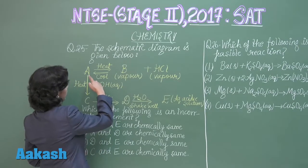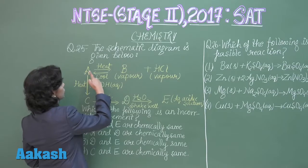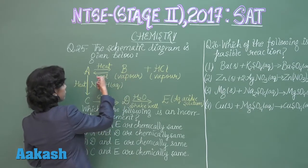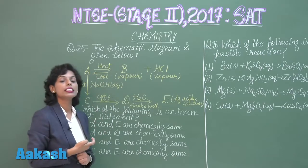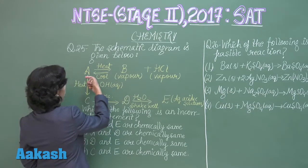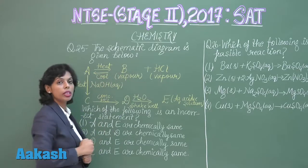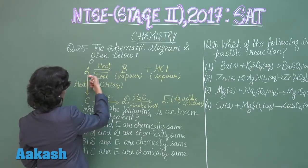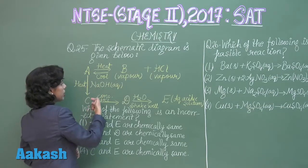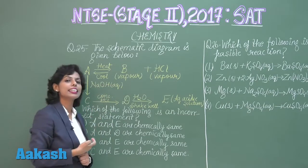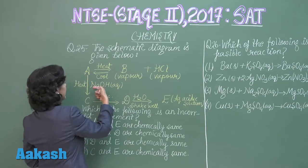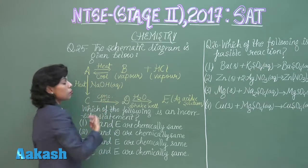In this reaction, substance A when heated gives B, and if cooled changes back to A. This is the property of ammonium chloride — when heated, ammonium chloride gives B, which is ammonia, along with HCl. Also, A reacts with NaOH to give C, which is again ammonia — another property of ammonium chloride.